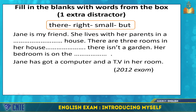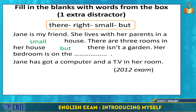Let's start with the first task. You have to complete the paragraph with words from the box. The words are: there, right, small, but — but be careful, there is an extra word. The paragraph reads: Jane is my friend. She lives with her parents in a small house. There are three rooms in her house. There isn't a garden. Her bedroom is on the right. Jane has a computer and a TV in her room.